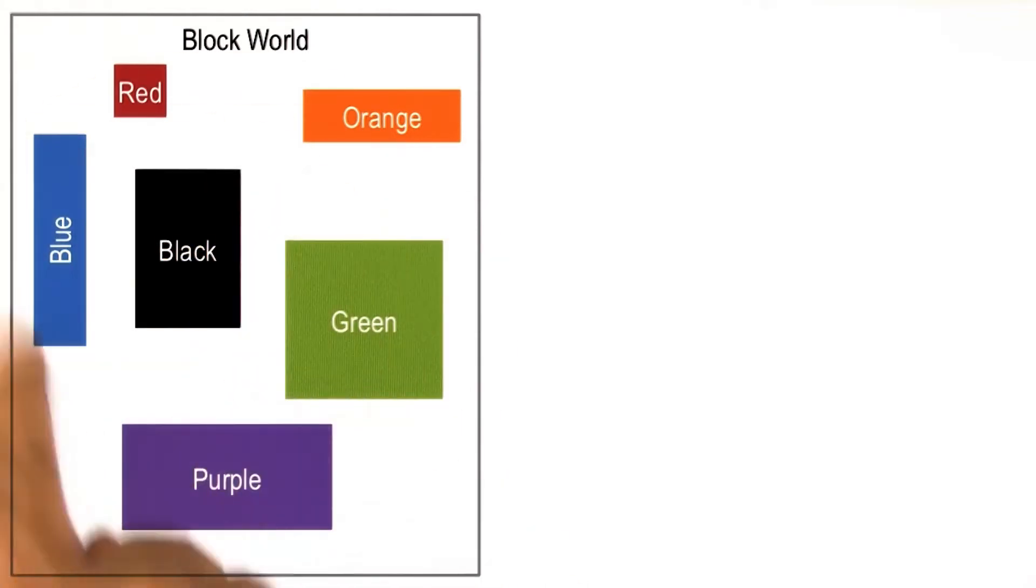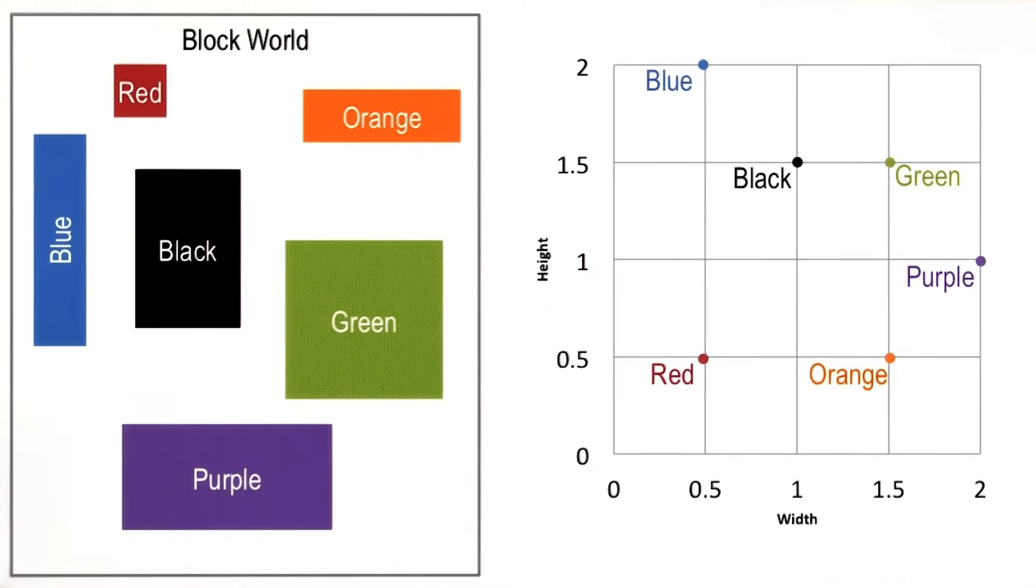So once again, here is the world of various colored blocks. We can represent these various blocks—back to the notion of knowledge representation—in a two-dimensional grid, the width of the block and the height of the block. So the blue block may lie here, the red block here, and so on.